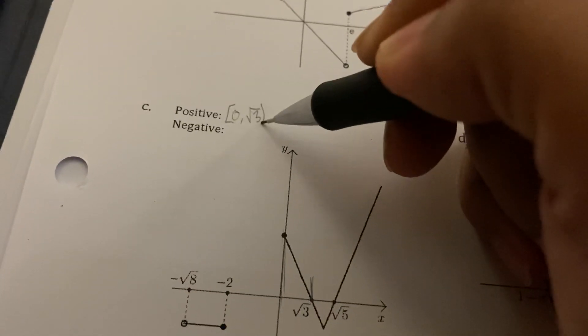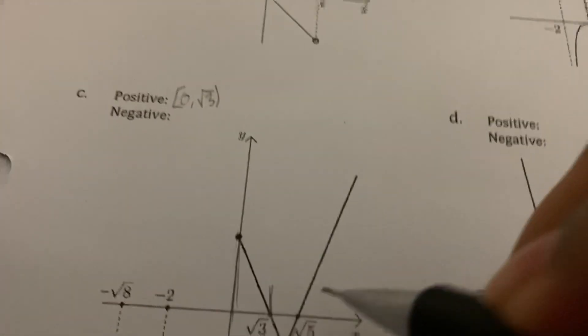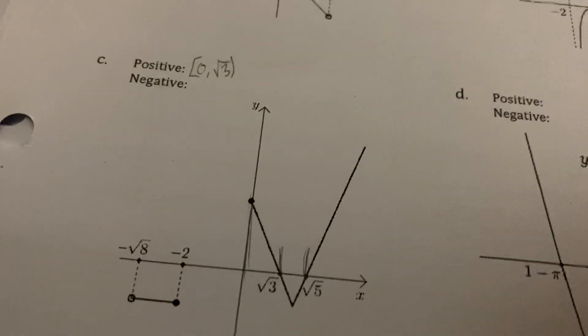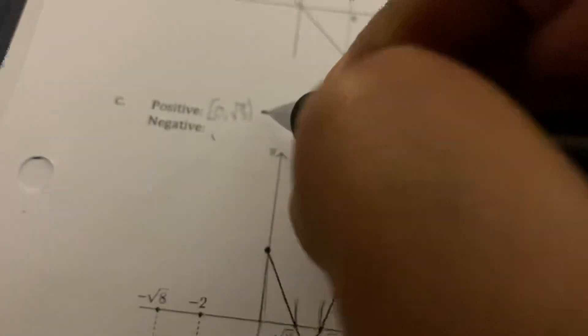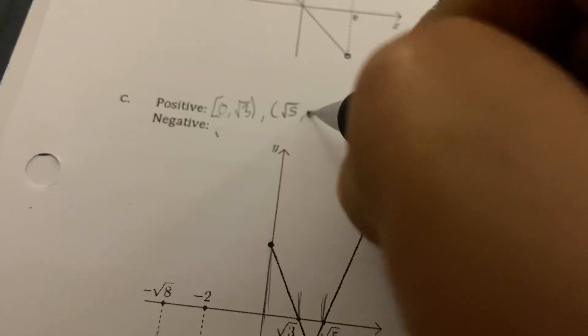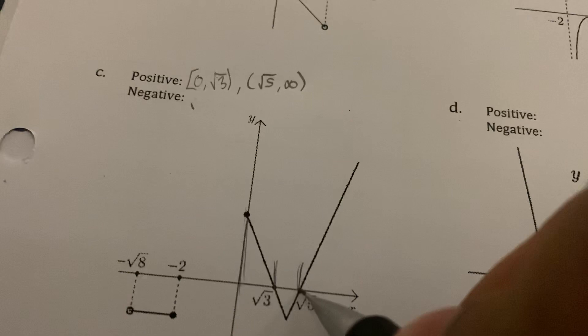Notice it's above the x-axis at zero, so we include it, but it's not above the x-axis here because it's at zero, so it's not positive or negative. Then there's another one from here and then on to infinity, so from square root of five to infinity.